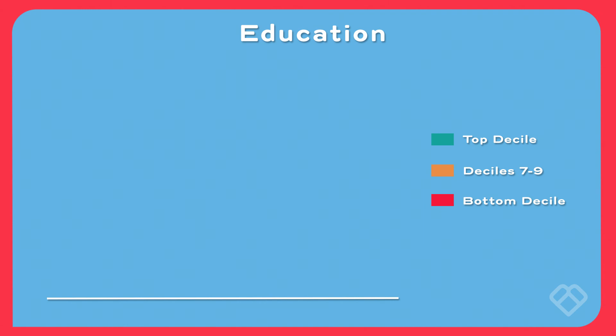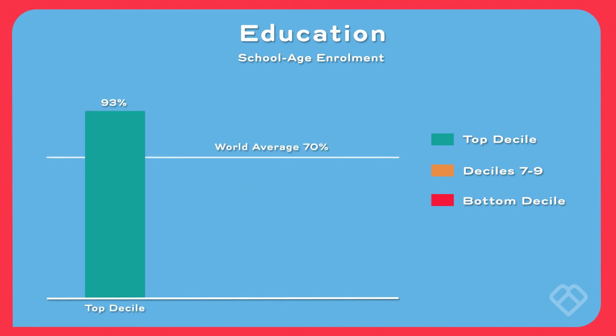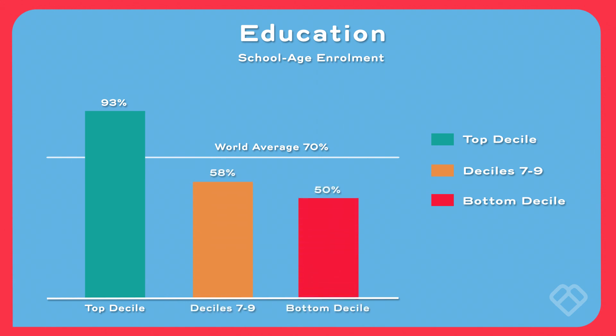Similarly, looking at school-age enrollment for kids in primary and secondary school: in the top decile it's about 93%. In deciles seven through nine it goes down to 58%, and in the bottom decile about half of school-age kids are enrolled in school.